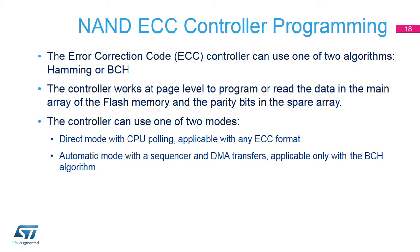The controller works at page level for reading and/or programming the NAND Flash memory, with data located in the main array and parity bits in the spare array, also known as OOB. The controller can use one of two modes: direct mode with CPU polling, applicable with any ECC, or automatic mode with a sequencer and DMA transfers, applicable only with the BCH algorithm.